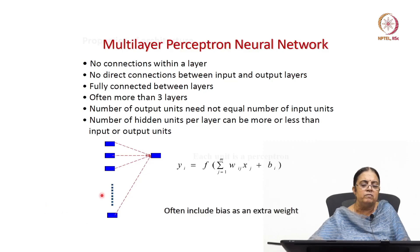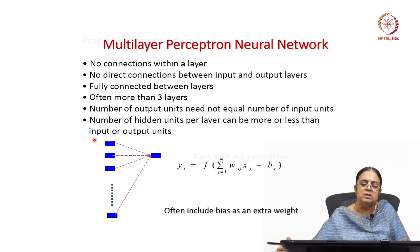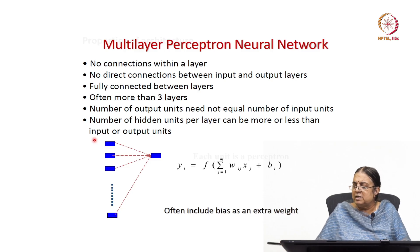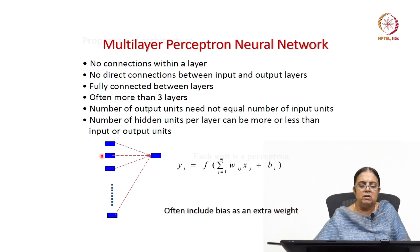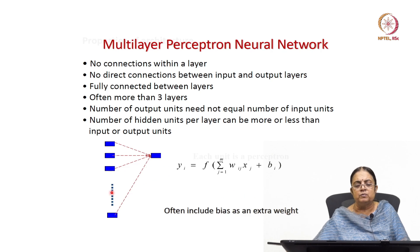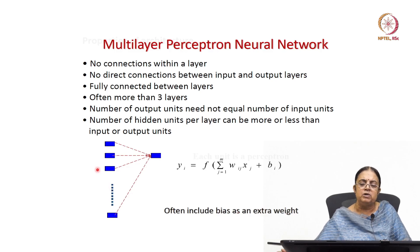Now we will talk about the multi-layer perceptron. In the multi-layer perceptron, we have an input layer, a hidden layer, and an output layer. The hidden layer — there may be two hidden layers or a single hidden layer. There is no connection within a layer; one layer is only connected to the next layer, and we have directed links starting from the input going to the output. There is no connection between the input and output layer.